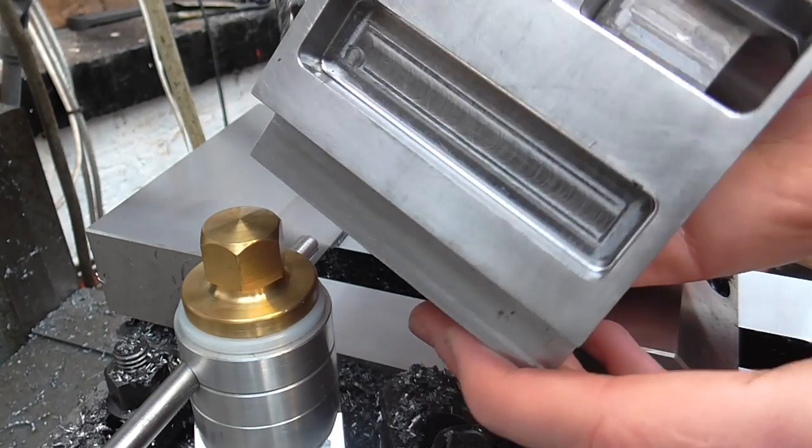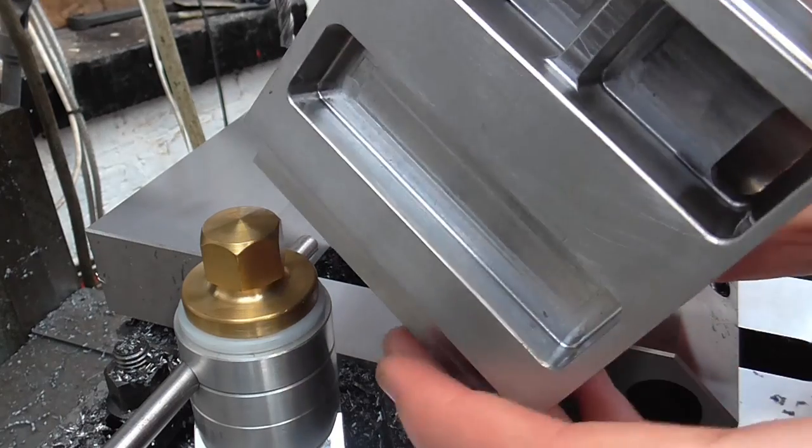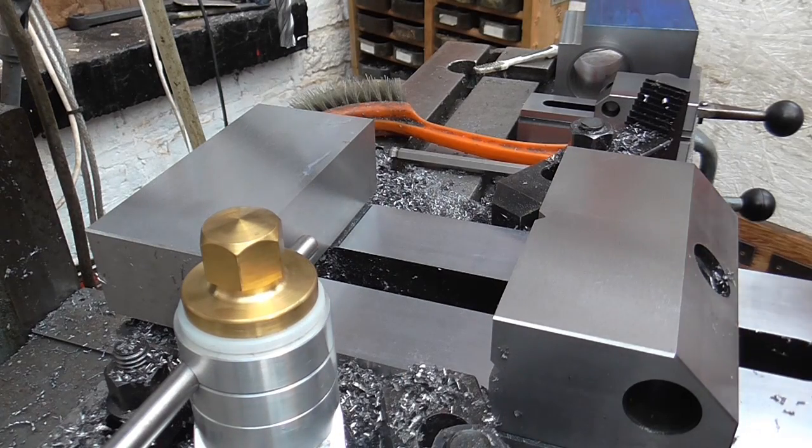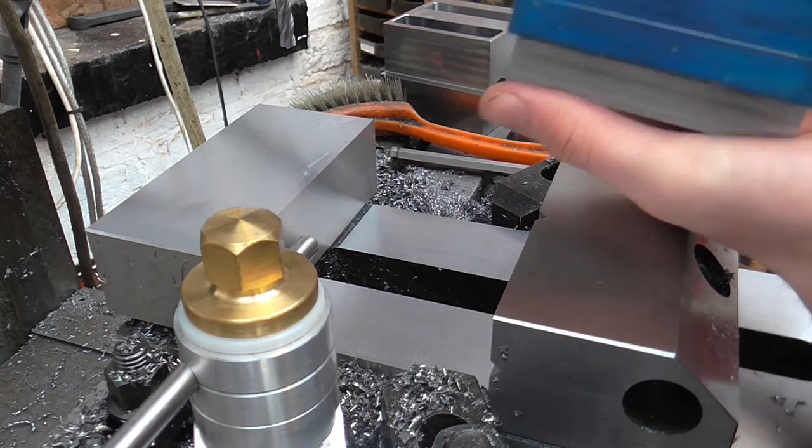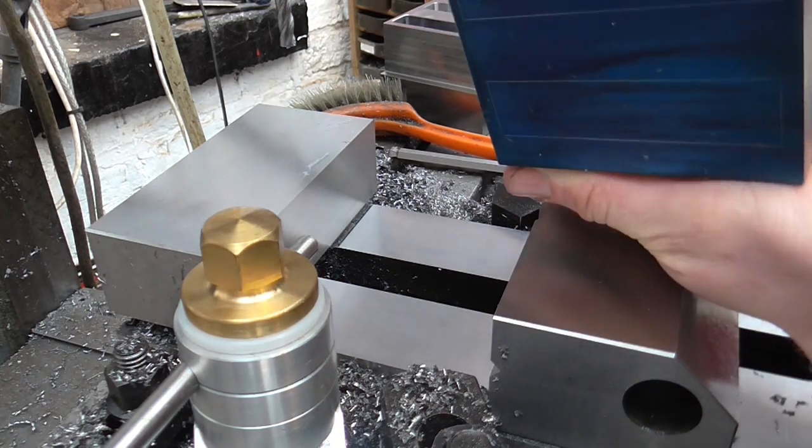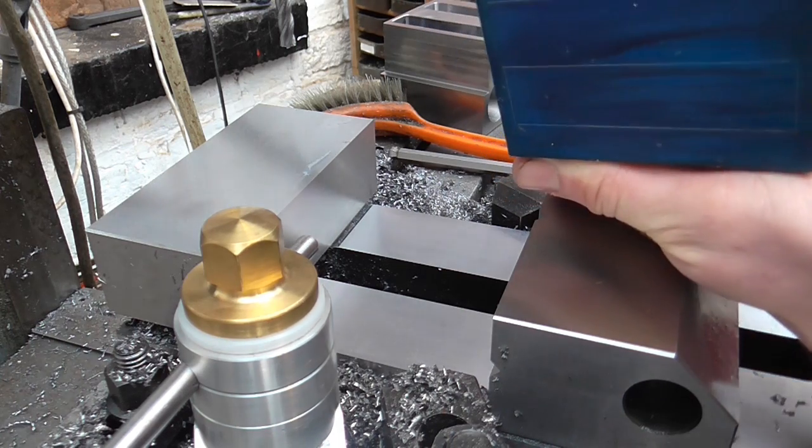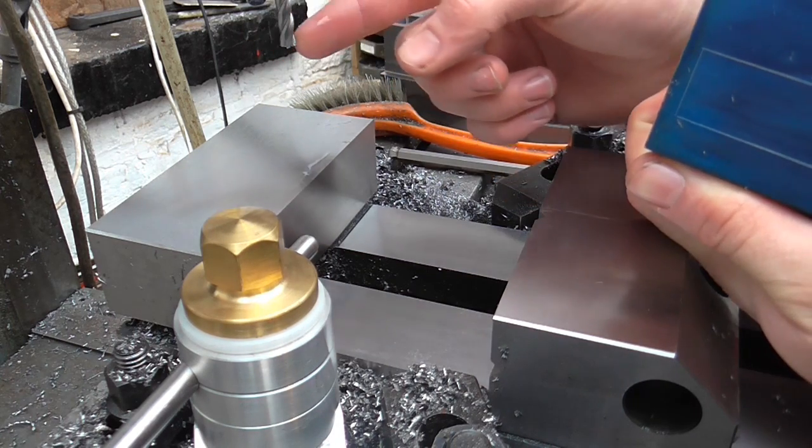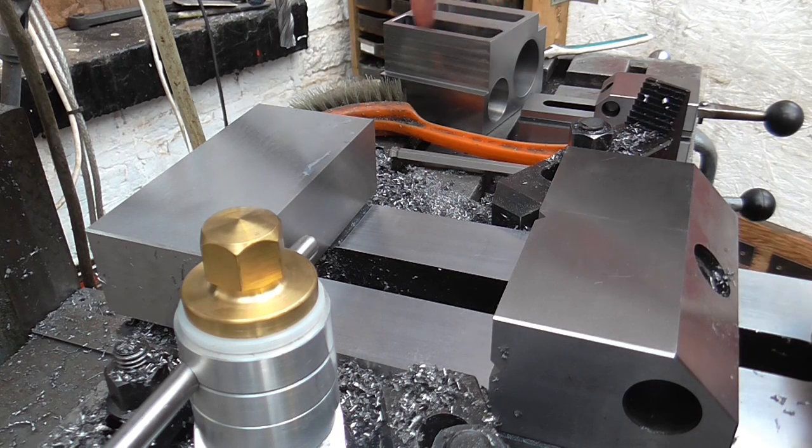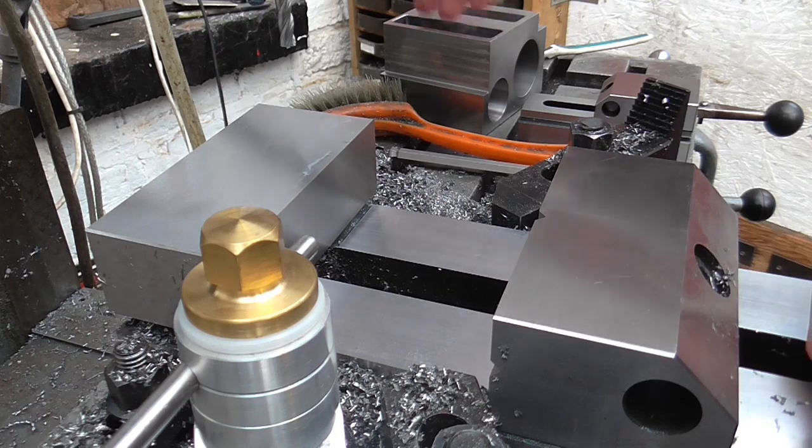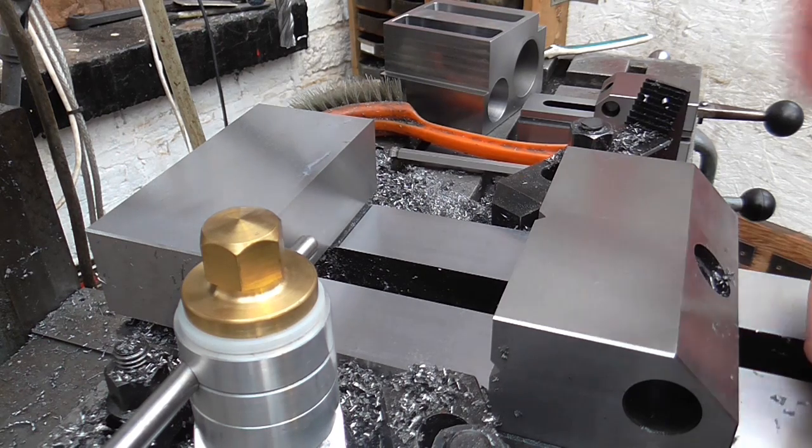Now these pockets really aren't crucial dimension wise, I'm just aiming for them to be symmetrical and the same on both blocks. But what I'm going to do is rough out the pockets to the lines with a 10mm end mill, and then I'm going to put the 6mm cutter back in and work to the same numbers that I used for producing these pockets, so we should end up with pretty similar pockets on both.